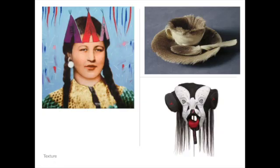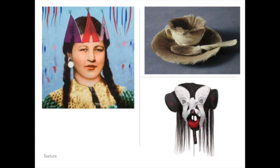Looking at texture, Meret Oppenheim's 'Object' shown in the top right is an example of unity — a surrealist artwork born out of a conversation between Oppenheim and Picasso about how anything can look good in fur. The texture is so uniform and works so well together that it's engaging, yet knowing what the object is creates discomfort because of that overall texture.